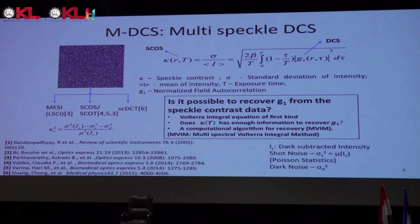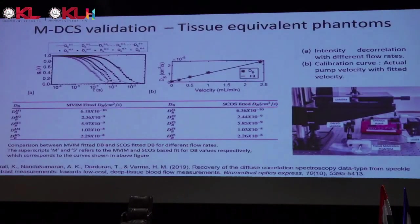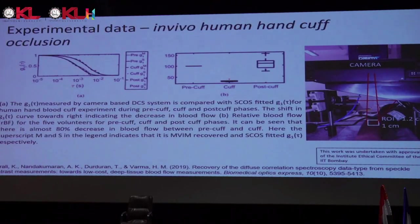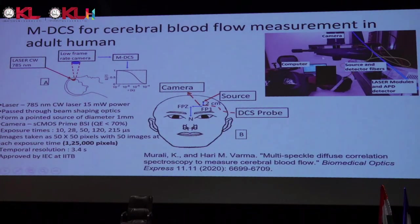With single-exposure data you cannot recover DCS measurements from SCOS, but with multi-exposure data, because of this cumulative sum property, you can. We validated this in tissue-equivalent phantoms and in vivo with a human hand-cuff occlusion experiment — cuffing the hand, placing the probe, and measuring perturbed blood flow during pre- and post-occlusion phases. We then applied mDCS for cerebral blood flow measurements in adult humans, delivering light through optical fibers to the forehead and collecting data both by fiber for standard DCS and by camera for mDCS.